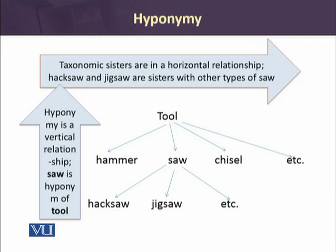To explain some hyponymic relations: we have a superordinate term tool, and hammer and saw belong to tool. When we say saw, saw includes the meaning of tool. Similarly, hammer also includes the meaning of tool. Then we have hacksaw and jigsaw — both include the meaning of saw. So we can say that jigsaw and hacksaw are the hyponyms of the word saw.